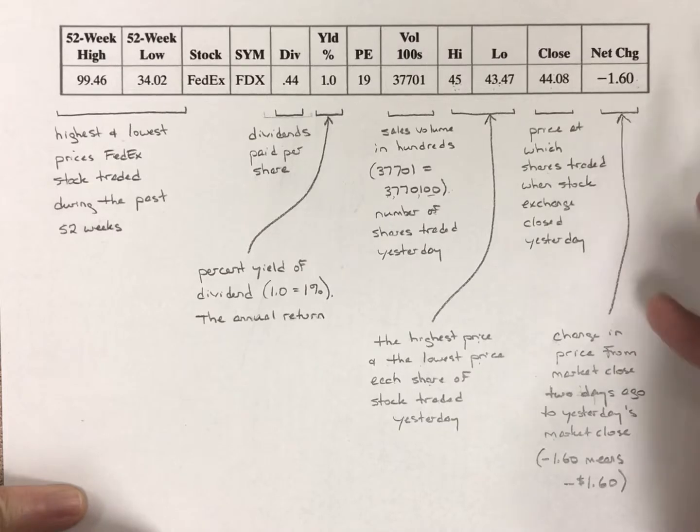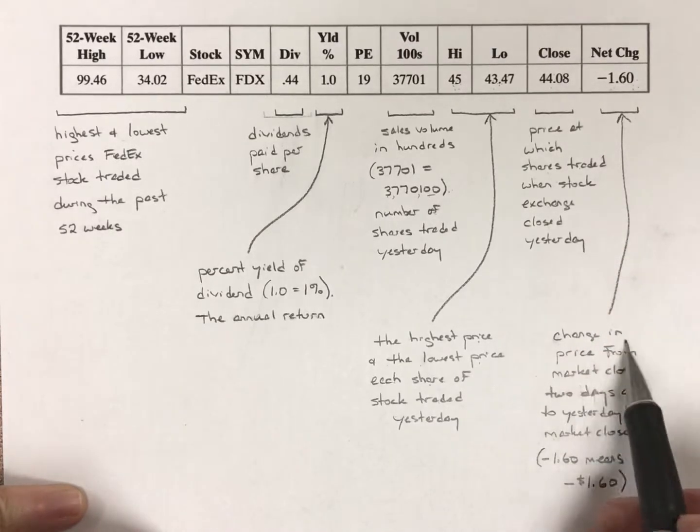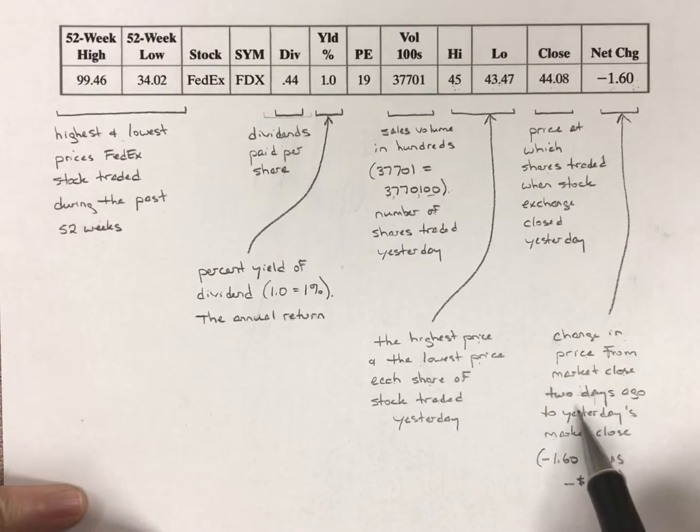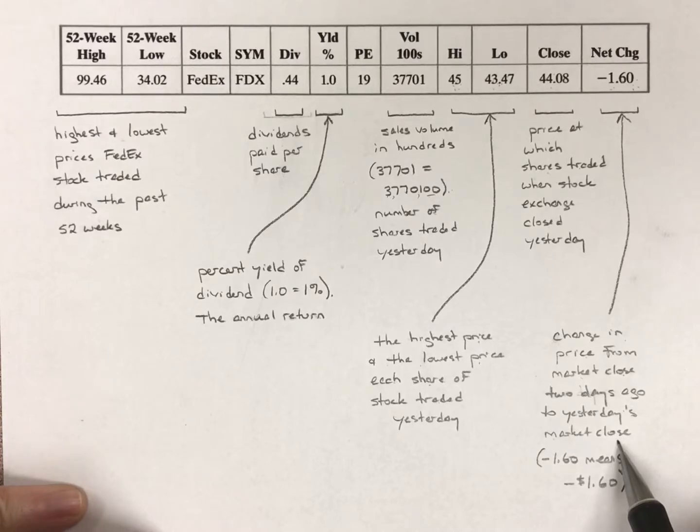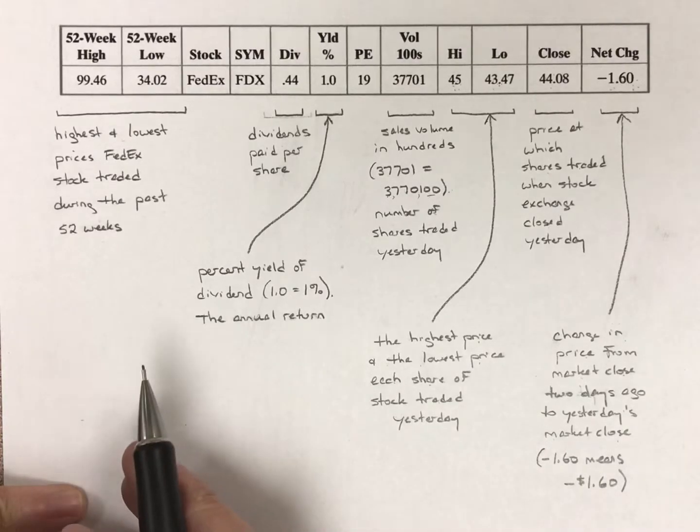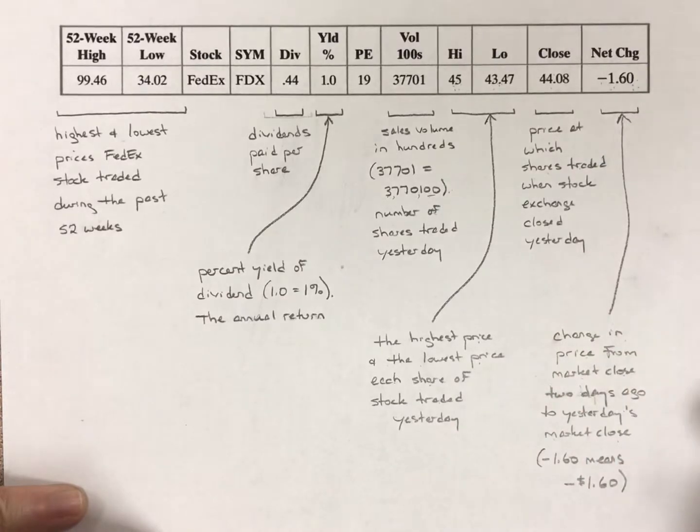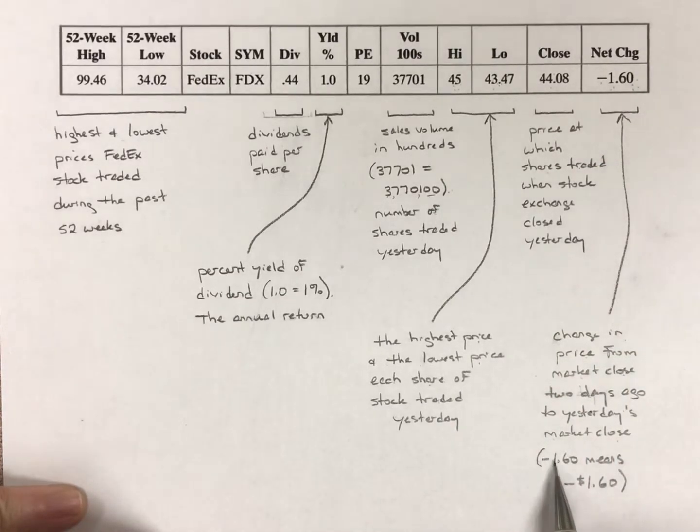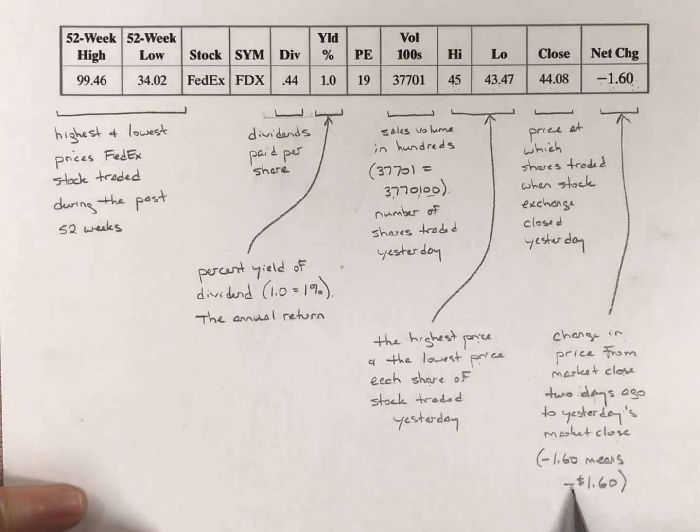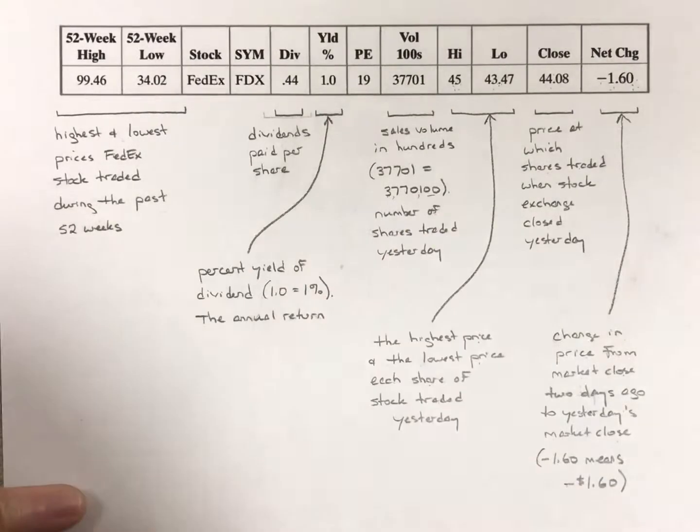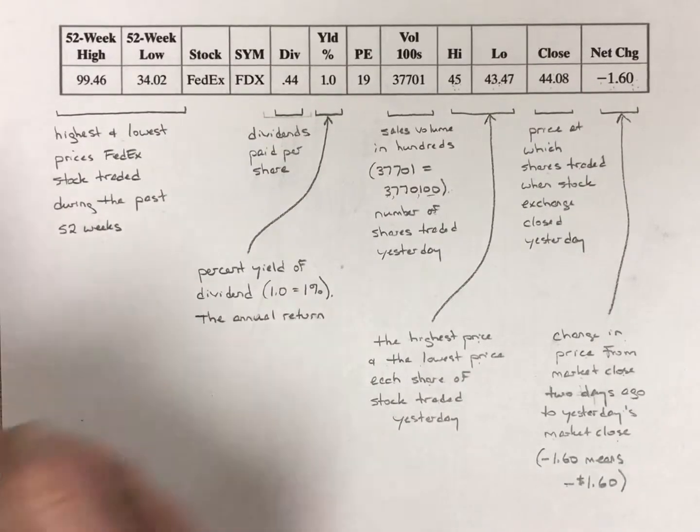The net change is how much the price changed. It's the change in price from when the market closed two days ago to yesterday's market close. So what happened from when it closed two days ago to when it last closed? Well, it went down $1.60 per share. Again, minus $1.60 means down $1.60 per share. So this gives you some idea of how to read a stock table and what takes place with how all these things come together.